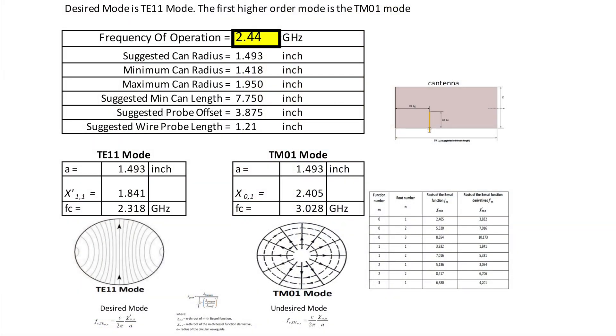For instance, using the Excel file at a desired frequency of 2.44 GHz — about the middle of the 2.4 GHz Wi-Fi band — the spreadsheet suggests a radius of 1.493 inches, with a minimum of 1.418 inches and no more than 1.95 inches. The length of the antenna should be at least three-quarters of a wavelength in the waveguide, which is about 12 inches. A minimum length is about a half wavelength — approximately 7.75 inches at 2.44 GHz. Some experimenters have actually built this type of antenna from metal cans, including vegetable cans — it's called a cantenna.